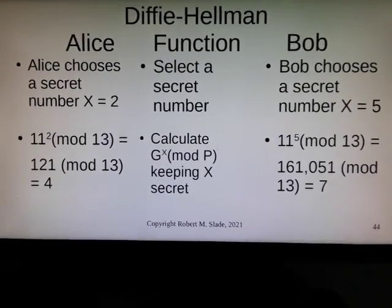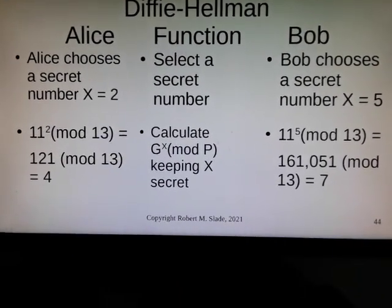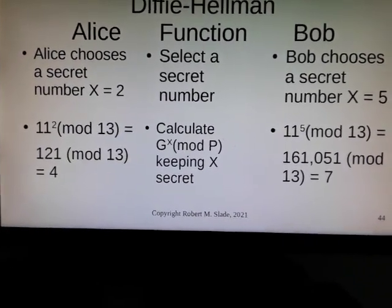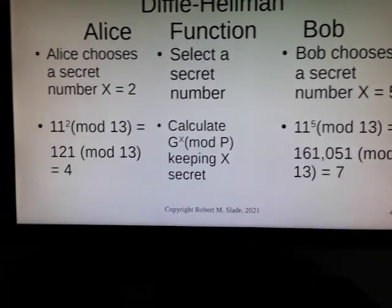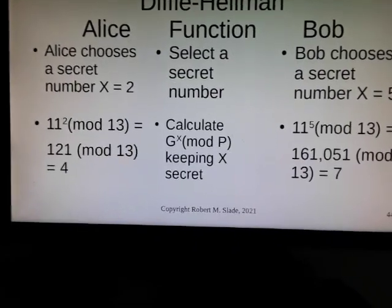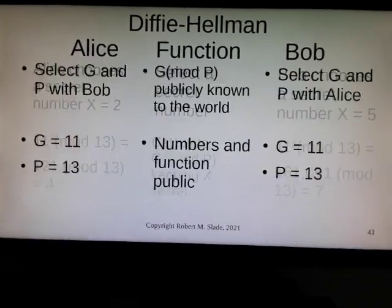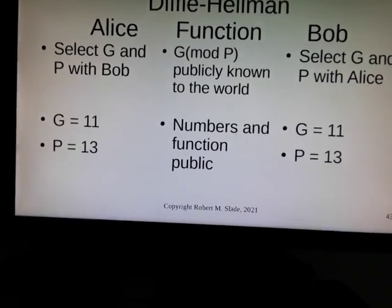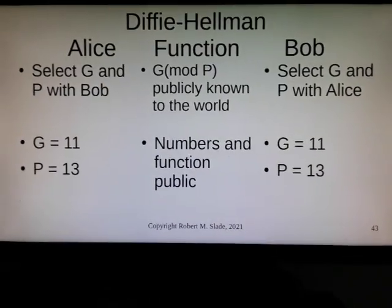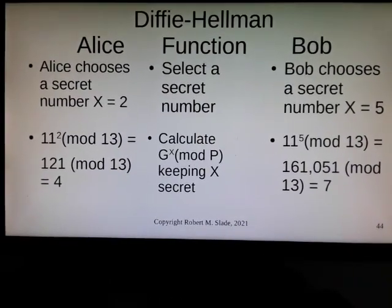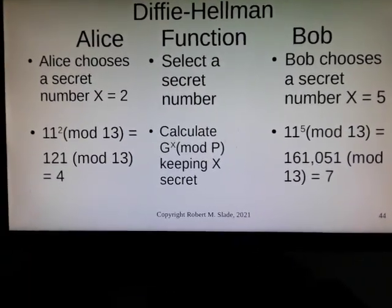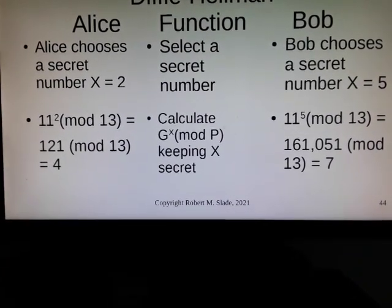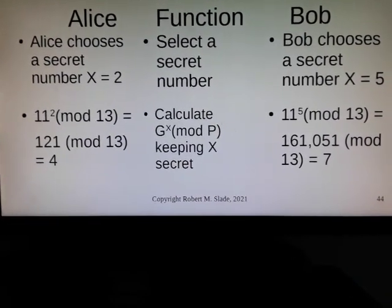So for Alice: 11 to the power of 2 — 11 squared mod 13. Remember, these are the numbers that were previously chosen: G is 11 and P is 13. So 11 squared is 121, mod 13 equals 4.